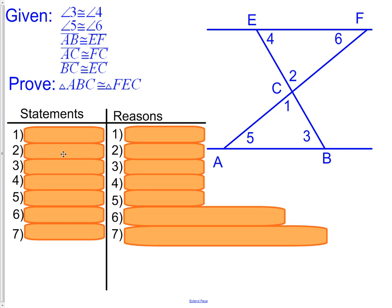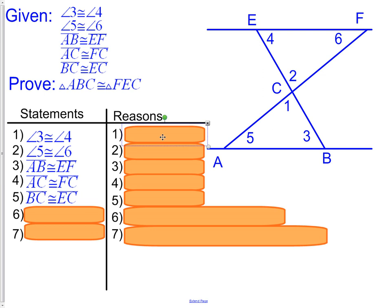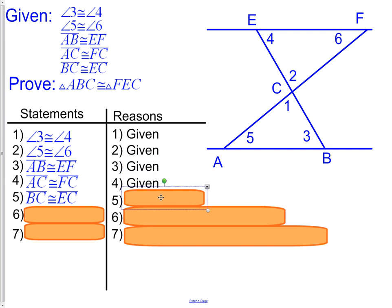Let's start out with the obvious first steps. We are going to state the five pieces of given information, and the reason that is showing up in our proof is that it was given to us.